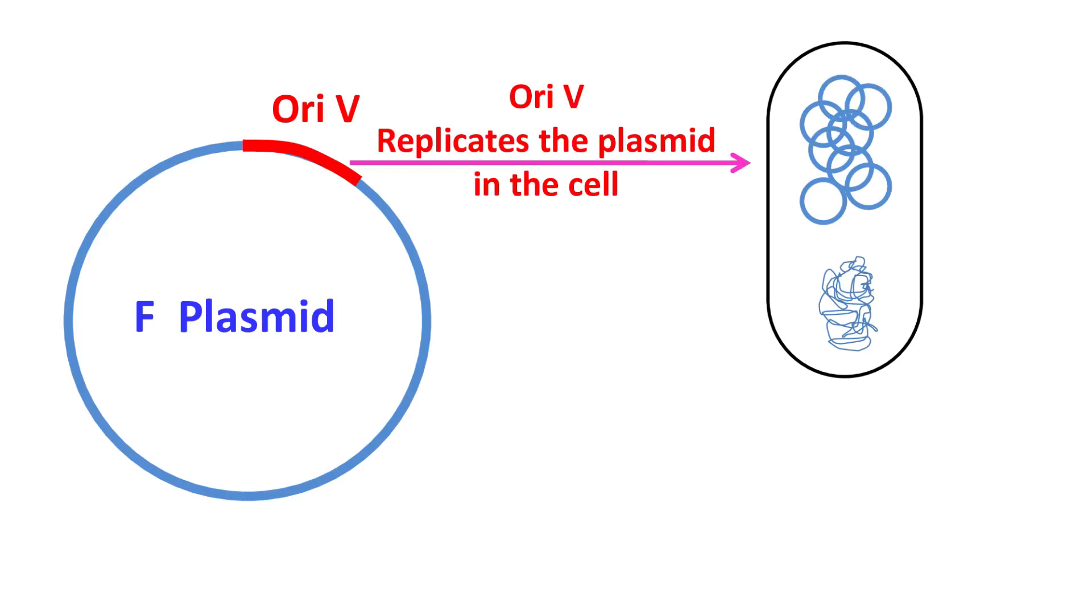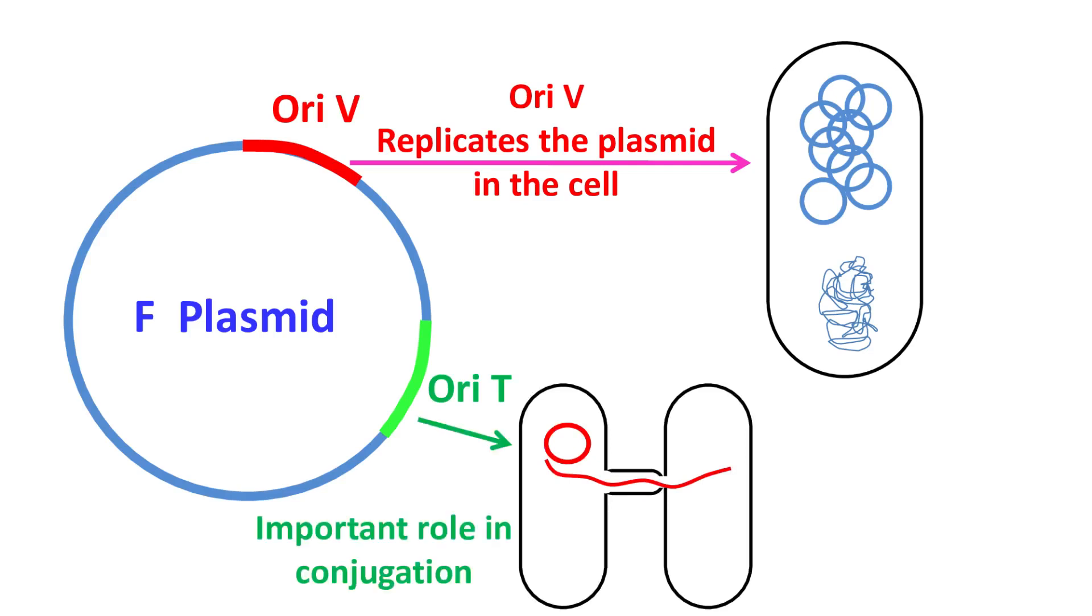Besides OriV, the other origin of replication that the F-plasmid has is the OriT. OriT is a region that plays an important role in replication of plasmid during conjugation.